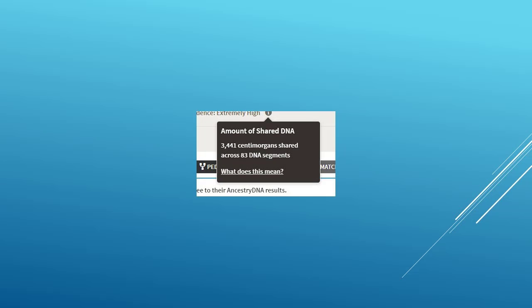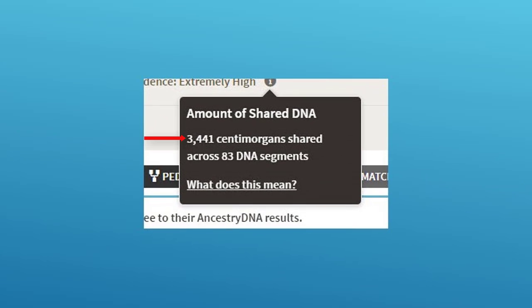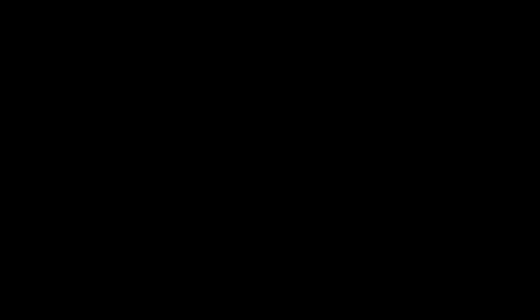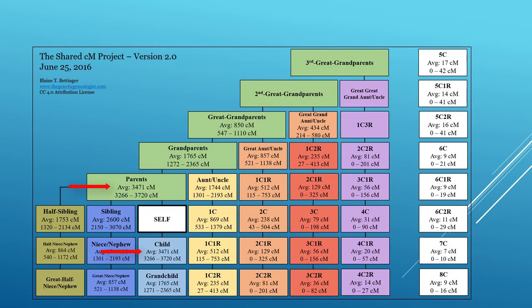In this screenshot from Ancestry DNA, we see a match that has 3,441 centimorgans. Let's look again at our centimorgan chart. Based on our total number of 3,441 centimorgans, we can tell that this DNA match can only be a parent or child.